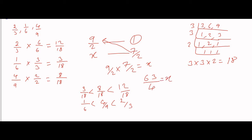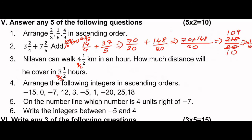So x equals 63/4, which as a mixed fraction is 15 and 3/4. The answer is 63/4 or 15 and 3/4 km.